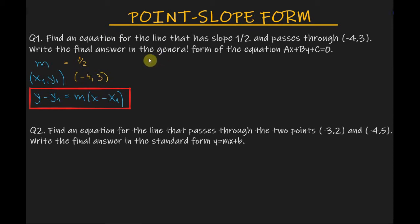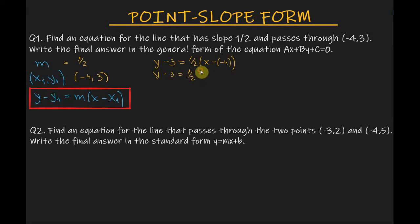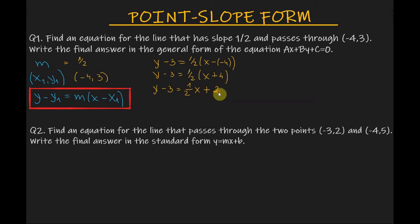So we have y minus 3 equals one half times x minus minus 4. That simplifies to y minus 3 equals one half x plus 4. Then y minus 3 equals one half x plus 2, since one half times 4 is 2. Now I will multiply everything by 2 in order to get rid of the fraction in front of the x variable.